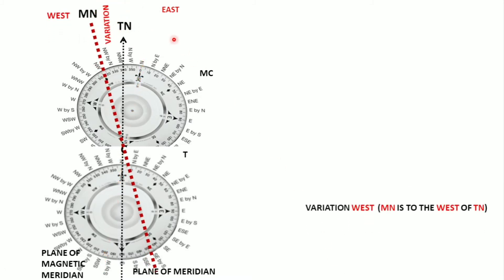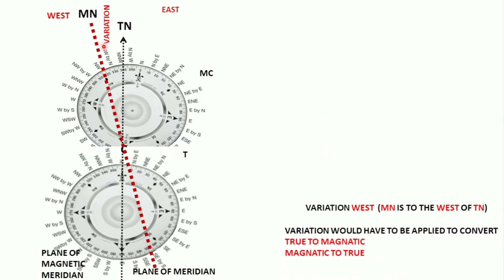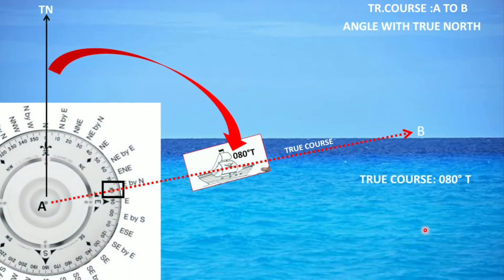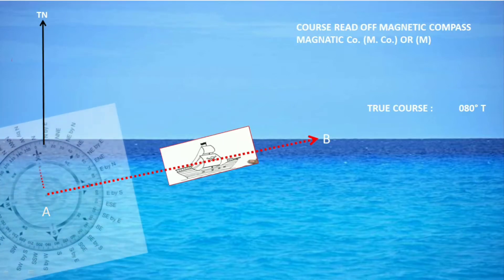If magnetic north was to the west, variation would be called west. You can see that if you had to convert magnetic readings to true, you would have to make use of variation. If you are going from A to B and with true north your angle is 080, that is your true course.